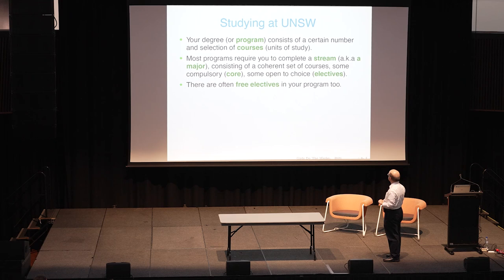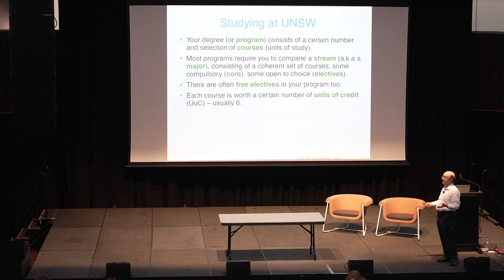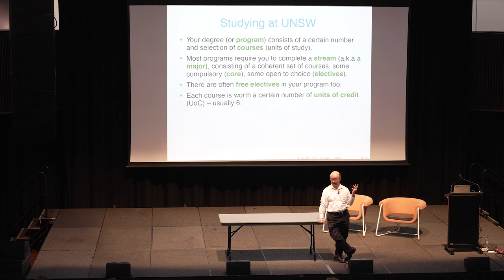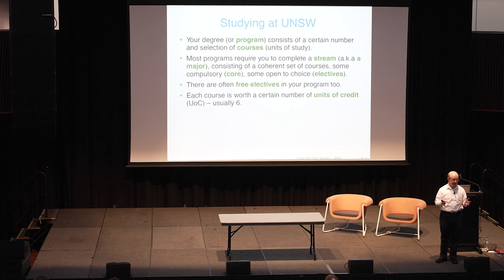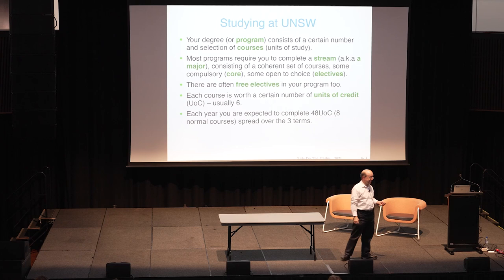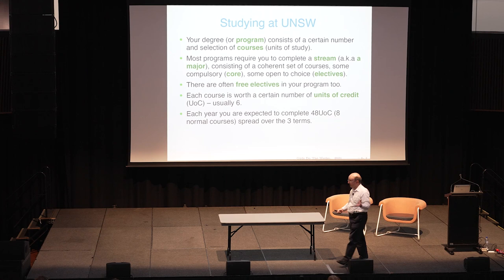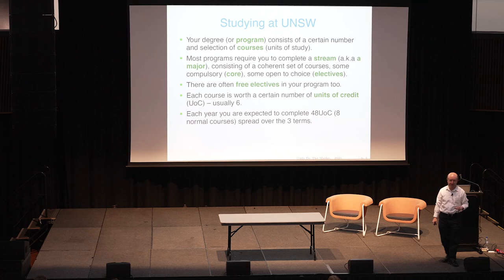We refer to courses by size — each course is worth a certain number of what we call units of credit. Almost every course at UNSW is six units of credit. A unit of credit is supposed to be 25 hours of work, so a six-unit course is 150 hours. Over a 10-week term, for each course you do, you should be spending 11 or 12 hours a week on it — that's what you do in the classroom and outside the classroom, preparing for tests, writing assignments, and so on. Each year you're expected to complete 48 units of credit — that's eight courses spread over three terms, which works out to roughly 36 hours of study per week.